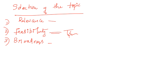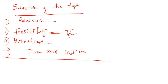The fourth aspect is time and cost constraints. Time and cost are important aspects to consider when selecting a research topic. These are the four aspects to keep in mind carefully for the selection of the topic.